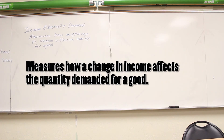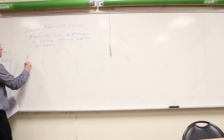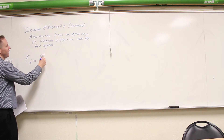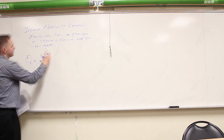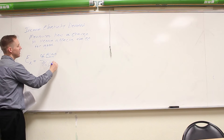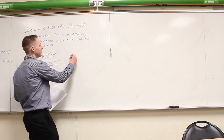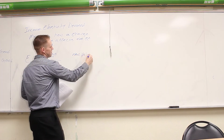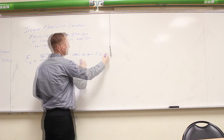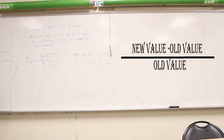Just as with cross price elasticity, we have two cases: normal and inferior goods. To calculate the income elasticity of demand, take the percentage change in quantity demanded over the percentage change in income — which is the new value minus the old value divided by the old value for both variables.